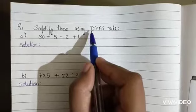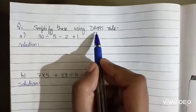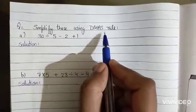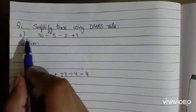Here DMAS stands for D is for division, M is for multiplication, A is for addition, and S is for subtraction. Let us solve some questions.